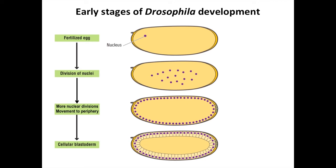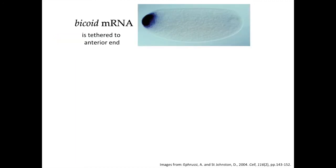This stage is called the cellular blastoderm. Prior to cellularization, the nuclei all reside in the same cytoplasm. Such an organization, in which many nuclei reside in the same cytoplasm, is known as a syncytium. Since there are no cell membranes between the nuclei in the syncytial stages, macromolecules can freely diffuse throughout this cytoplasm and affect all of the nuclei in the rapidly developing embryo. However, the Bicoid messenger RNA is tethered to one end, shown here stained in blue, so it cannot diffuse freely throughout the syncytium.